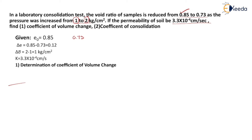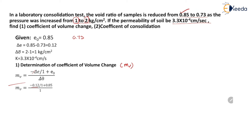First, we will determine the coefficient of volume change. The coefficient of volume change MV is given by: MV equals minus delta E divided by (1 plus E0), all divided by delta sigma bar. Putting in the values: delta E is 0.12, 1 plus E0 is 1 plus 0.85 equals 1.85, and delta sigma bar is 1. So the value of MV becomes equal to 6.486 × 10⁻² cm² per kg.